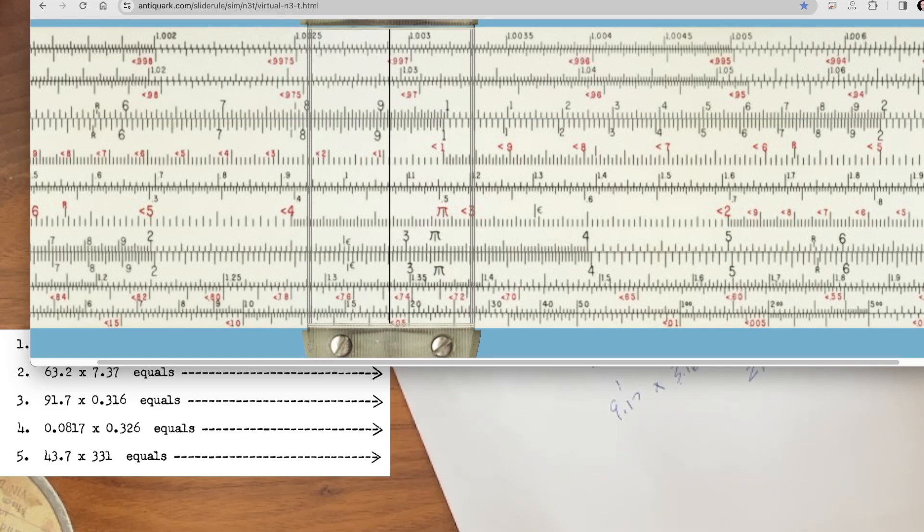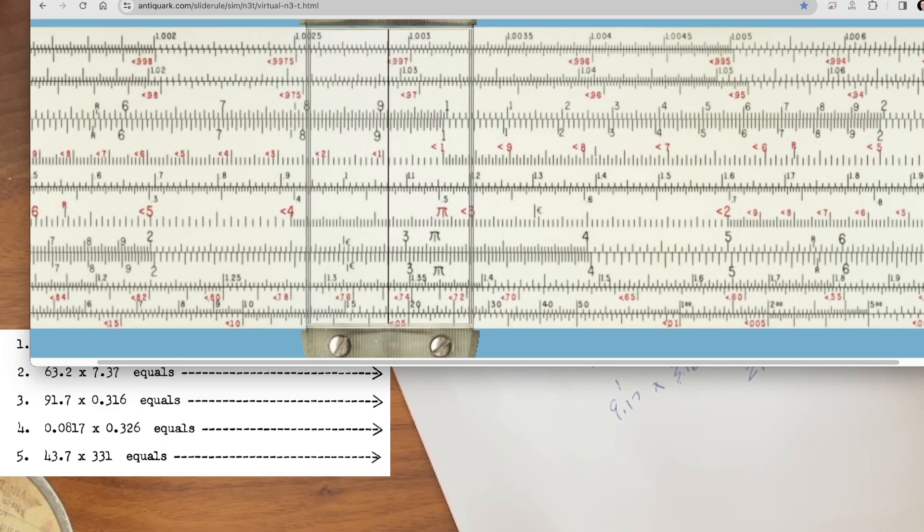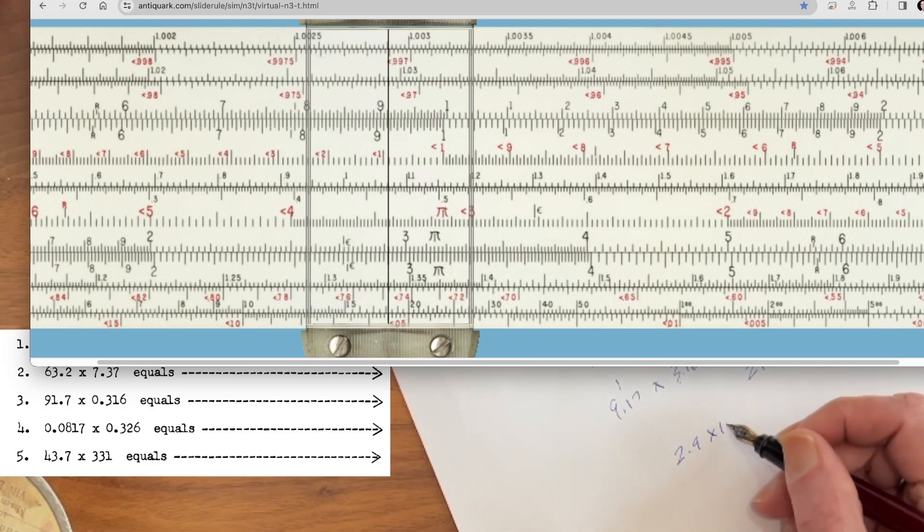There's 9.1, 9.5, and a little bit more. Let's move the whole thing over so we can see a little better. So here's 2, 2, 5, 6, 7, 8, and it's actually right at 9. So our answer will be 2.9 times 10 to the 1 equals 29, right?